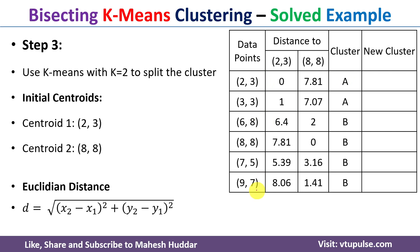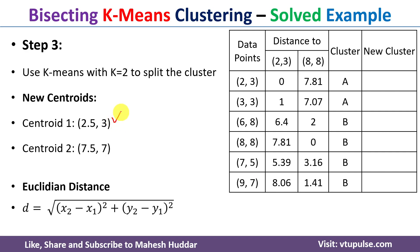After the first iteration, we have two data points in cluster A and four data points in cluster B. We need to calculate the new centroids. For cluster A: x̄ = (2+3)/2 = 2.5, ȳ = (3+3)/2 = 3. For cluster B: x̄ = (6+8+7+9)/4 = 7.5, ȳ = 7. So the new centroids are (2.5, 3) and (7.5, 7).